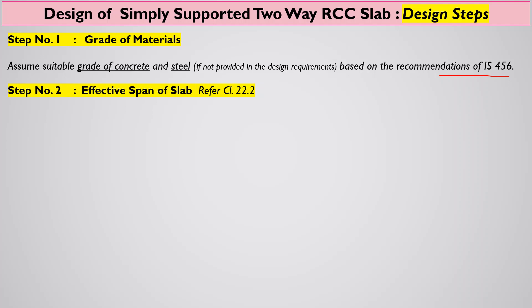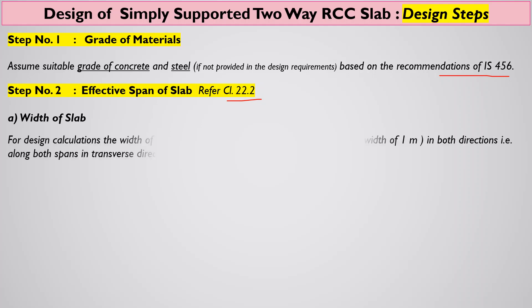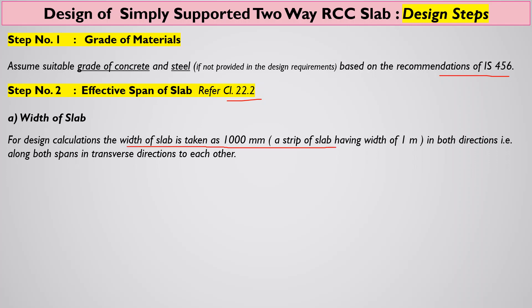What should be the effective span of the slab? We can refer to clause number 22.2. First, let us discuss the breadth of the slab. For design calculations, as in one-way slab design, we have to adopt the same pattern — we will be selecting a strip in the middle of the slab. Since it is a simply supported type of slab, a strip of 1000 millimeters will be picked.